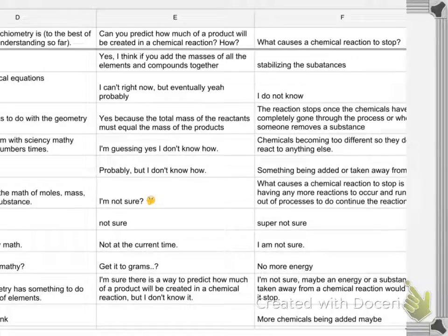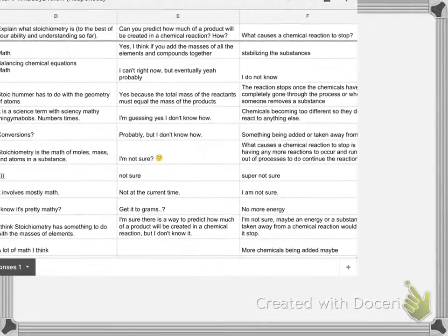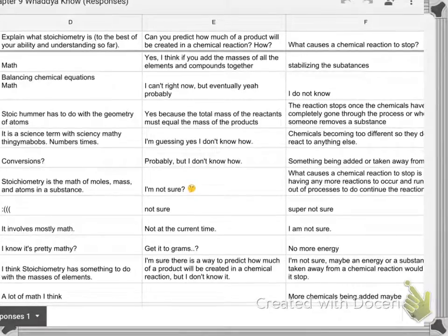The teacher asks students what causes chemical reactions to stop. Students give tentative responses: substances run out, something is taken away or added, no more energy, or maybe a substance is removed. The teacher acknowledges the uncertainty with 'lots of maybes, that's okay.'